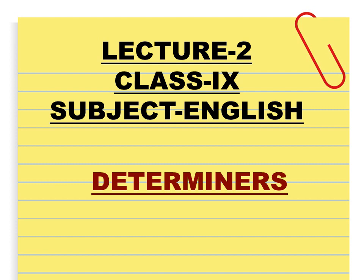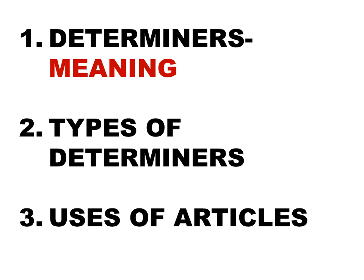Hello everyone. This is lecture 2, class 9th, subject English. The topic of this lecture is determiners. In the previous lecture we discussed about what determiners are. A determiner is a word which limits or fixes the meaning of a noun. Then we discussed about the types of determiners.